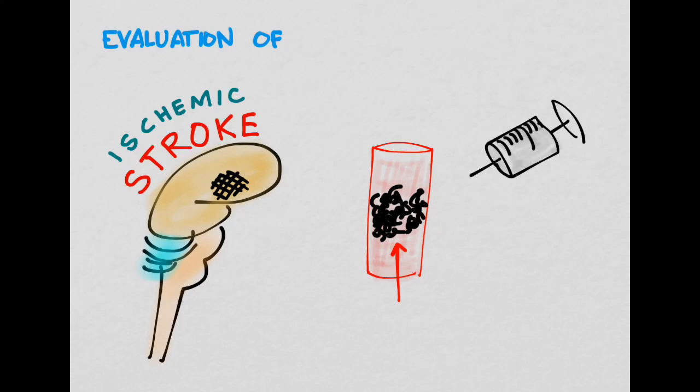We want to save that ischemic penumbra. The way we're going to get rid of this clot is through a drug called recombinant tissue plasminogen activator, though we usually just refer to it as TPA, tissue plasminogen activator.